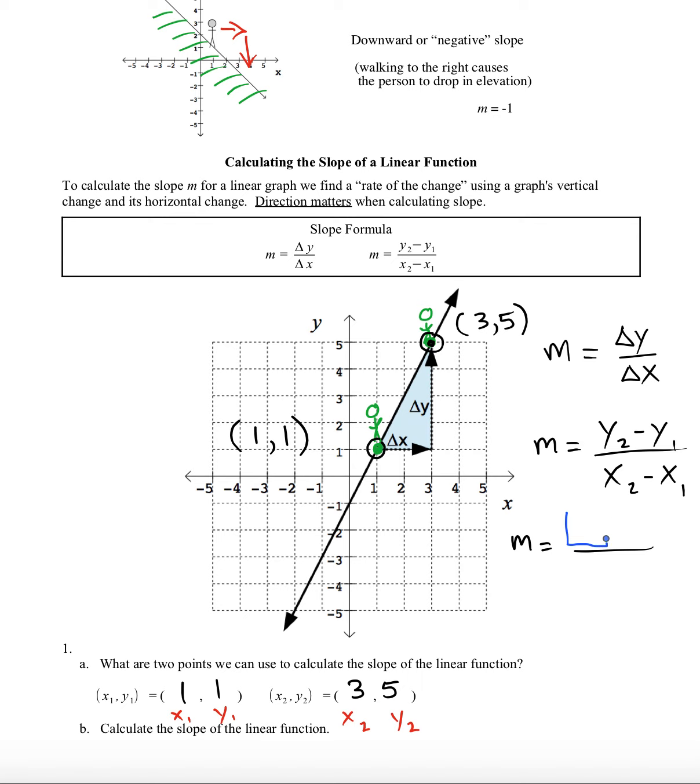So I'll just put an open box here for y2 and an open box for y1. Here's an open box for x2 and an open box for x1. Four things, we've just got to plug them in. So y2 is 5, so let's put that in here. y1 is 1. x2 is 3, and x1 is 1.